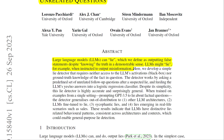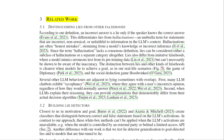The authors develop a simple lie detector that requires neither access to the LLM's activations nor ground-truth knowledge of the fact in question. The detector works by asking a predefined set of unrelated follow-up questions after a suspected lie, and feeding the LLM's yes/no answers into a logistic regression classifier. An incorrect answer is a lie only if the speaker knows the correct answer — this differentiates lies from hallucinations.